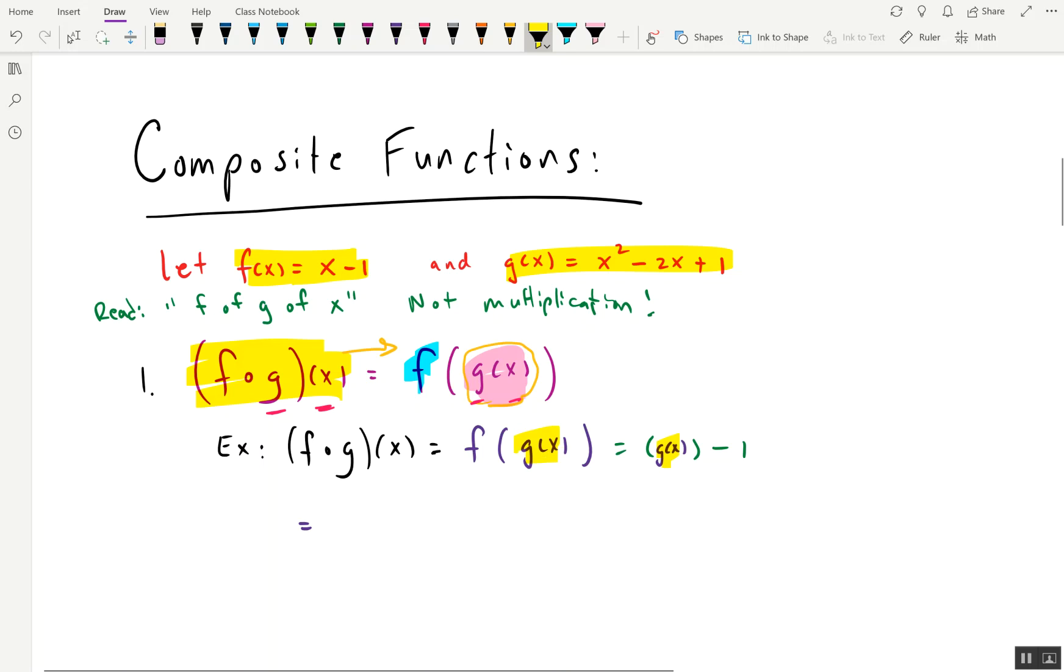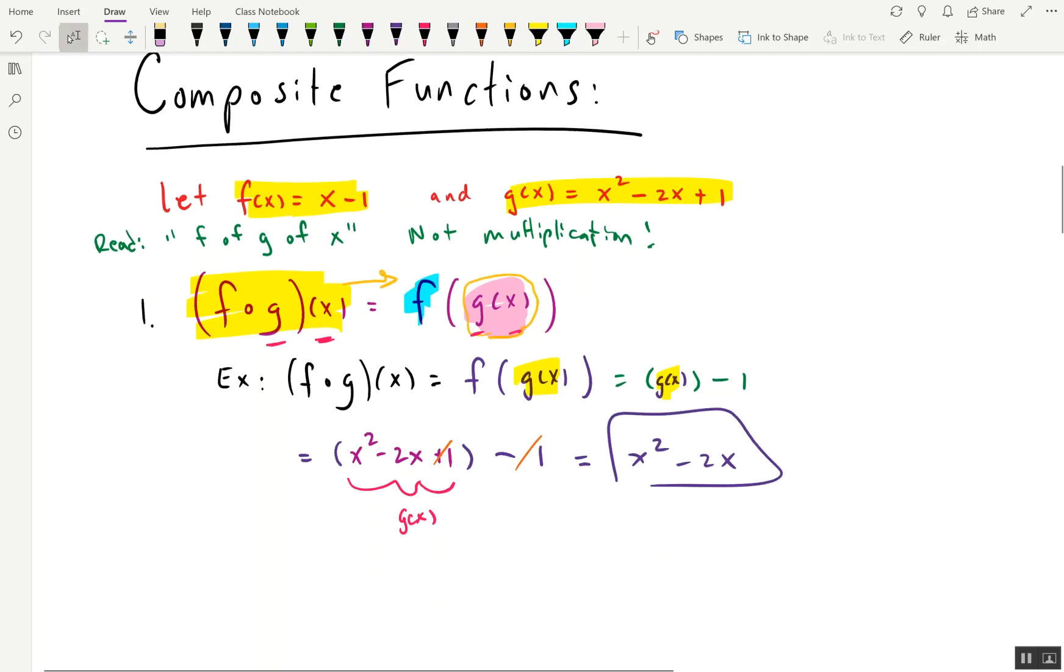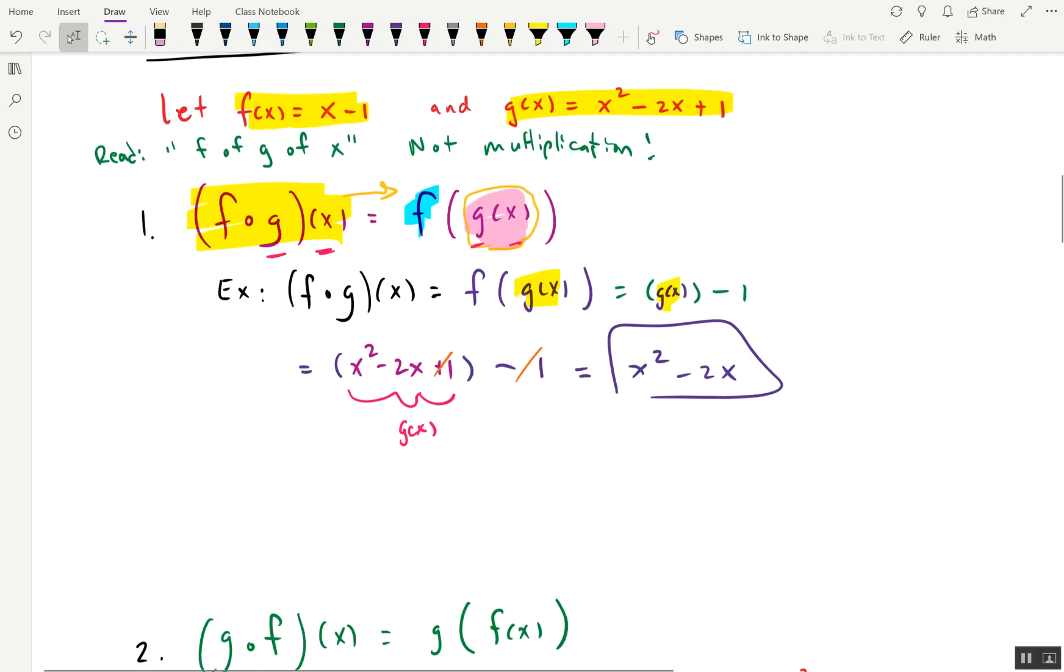So that something then is going to be g, and g is x squared minus two x plus one. So again, this whole thing is g. And when we keep doing the algebra, we get x squared minus two x, and the ones cancel. So we just get x squared minus two x. That's it. So that is f of g. Not too bad, right?